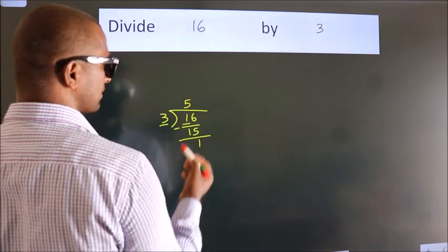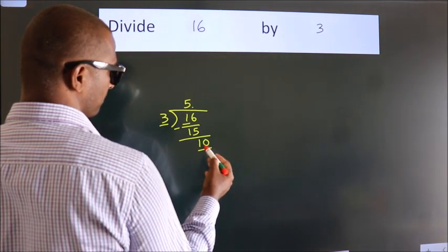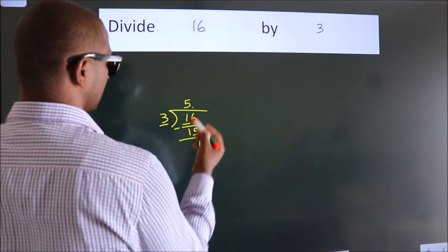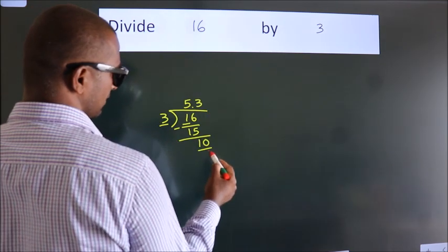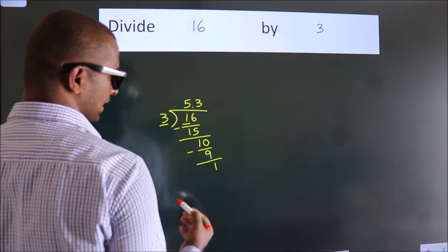So what we do is, we put a dot and take 0. So 10. A number close to 10 in the 3 table is 3 threes 9. Now we subtract. We get 1.